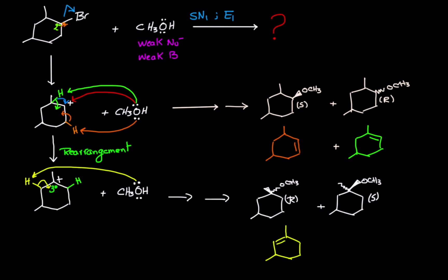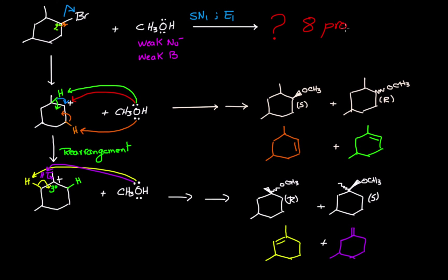There is also another beta hydrogen drawn in purple. Removing that hydrogen forms a double bond outside the ring, giving yet another new product. So as you can see, answering this kind of question is not as simple as it might seem, but following the rules you arrive at the correct answer: eight different products in total.